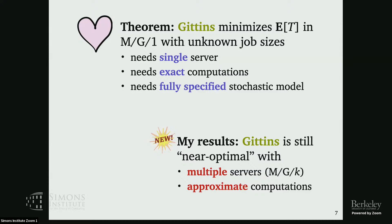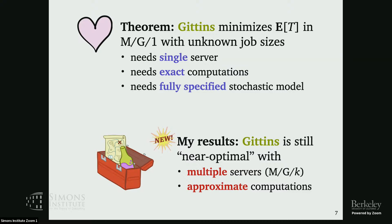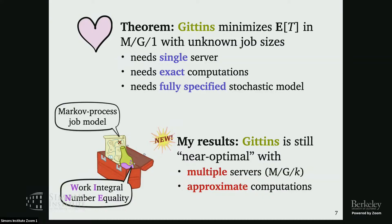The reason I'm excited to explore this theme is less about these results and more about the tools that underlie them. My thesis is called 'A New Toolbox for Scheduling Theory.' Two of the tools are called WINE (the work integral number quality) and a general way of thinking about queuing called the Markov process job. Both of these ideas might have analogs outside of queuing, so I'd be happy to discuss them.